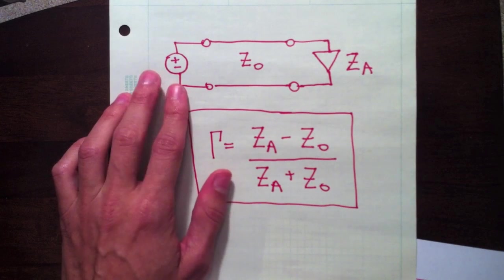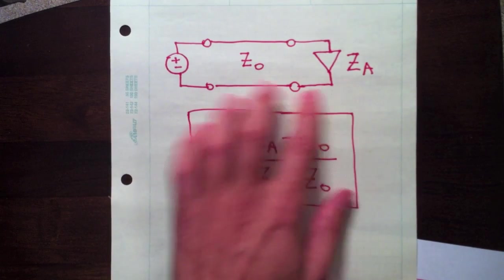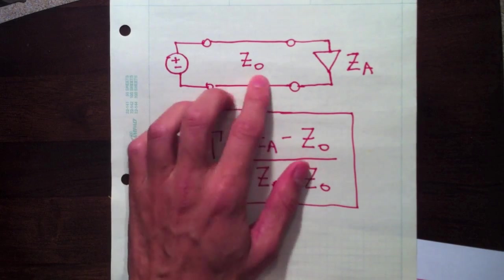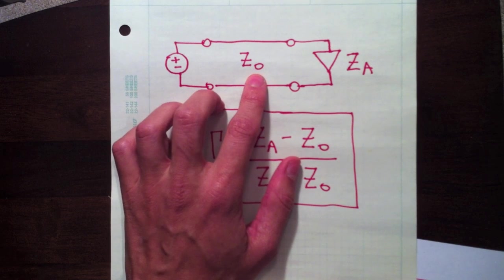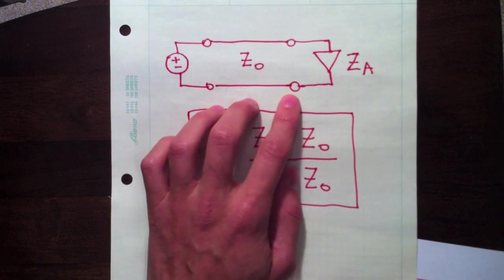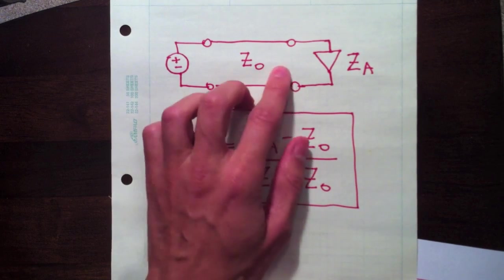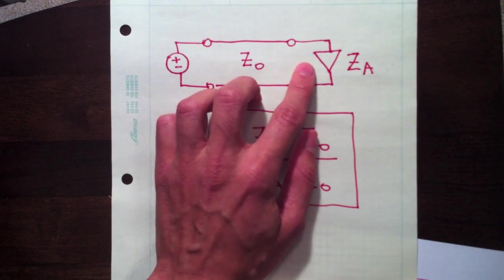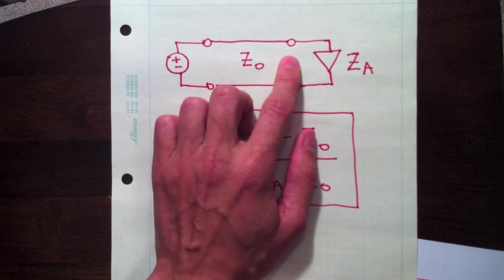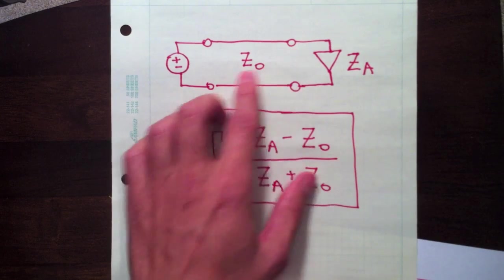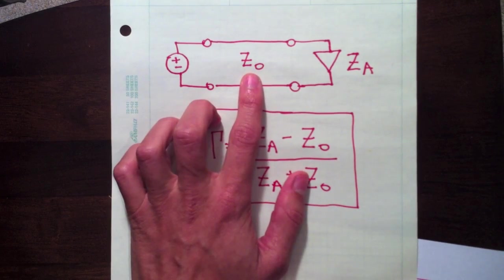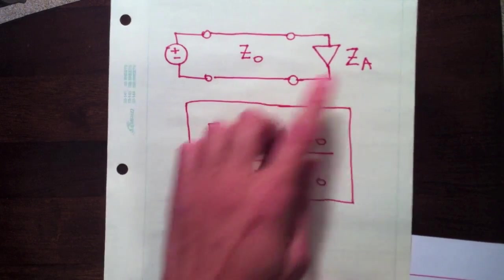So imagine you have some source here connected to an antenna via transmission line with characteristic impedance Z zero. The reflection coefficient is how much power is reflected at the antenna at the point where the transmission line is connected. So that's a function of the impedance of the transmission line and your antenna's impedance.